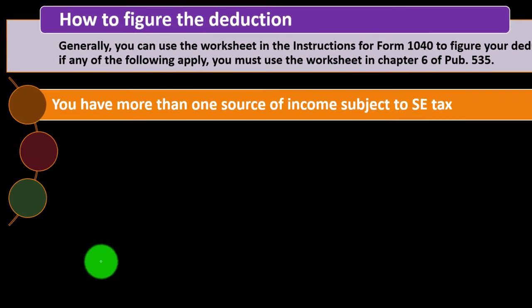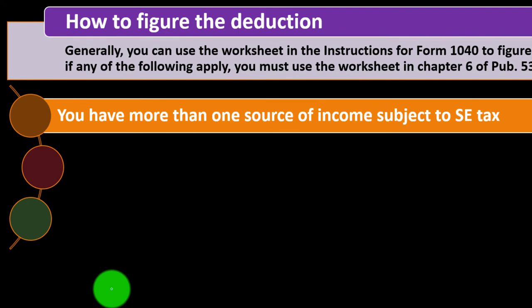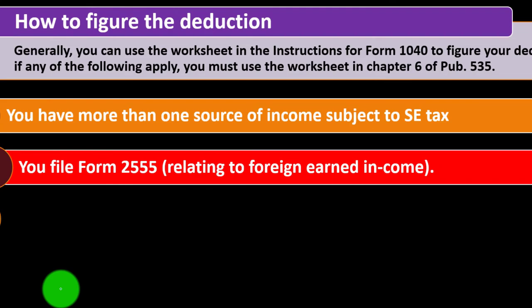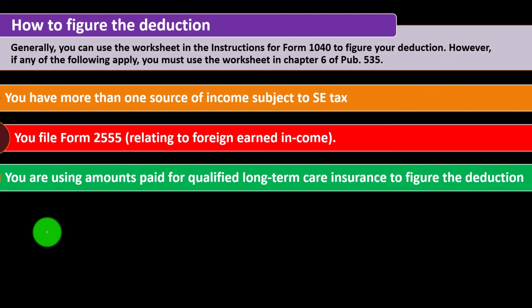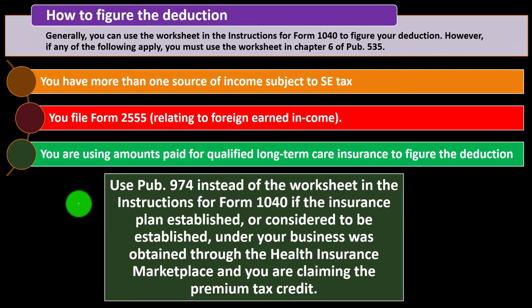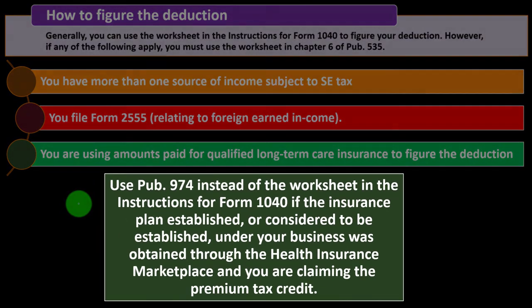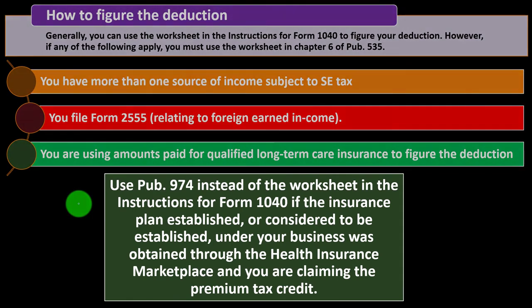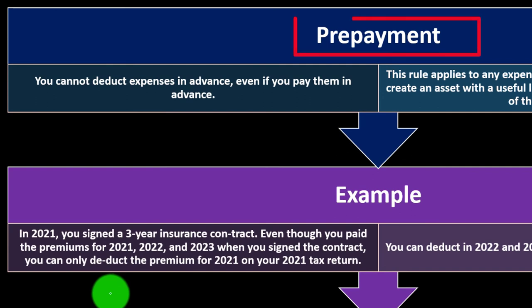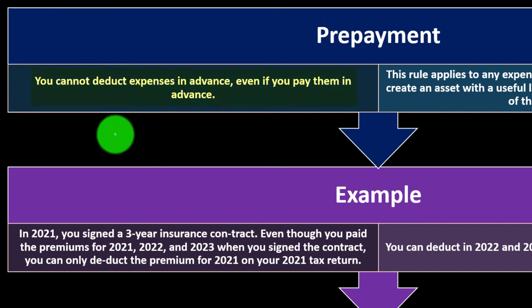However, if any of the following apply, you must use the worksheet in Chapter 6 of Publication 535: you have more than one source of income subject to self-employment tax; you file Form 2555 relating to foreign earned income; or you are using amounts paid for qualified long-term care insurance to figure the deduction. You could also use Publication 974 instead of the Form 1040 worksheet if the insurance plan was obtained through the health insurance marketplace and you are claiming the premium tax credit.